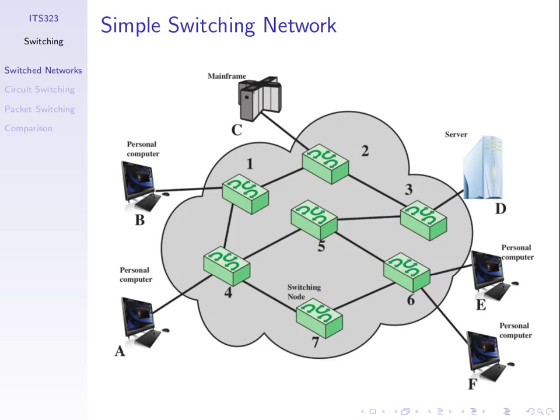Do we send via path 4-7-6, or 4-5-6, or 4-1-2-3-5-6 to get from A to F? That is what we'll call routing — choosing the best path. That's the next topic. To discuss this topic, we'll assume that we can choose a path. We assume that when we send data, the path is chosen and already known. We have stations that want to be able to communicate, and a network of switching nodes which provide connections so that any station can communicate with any other station.